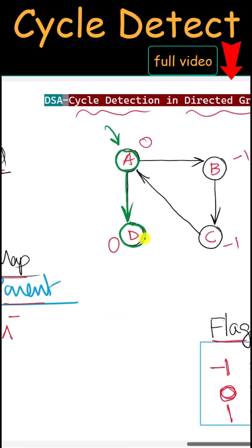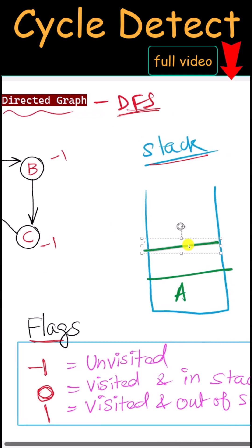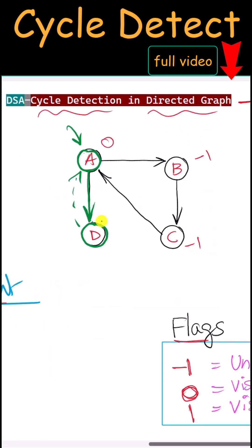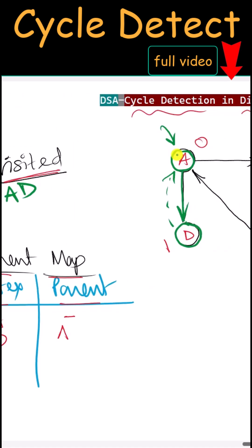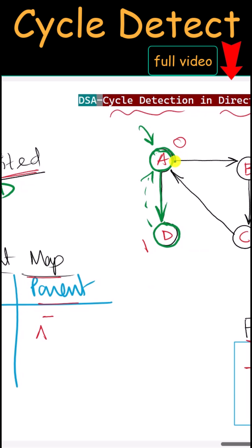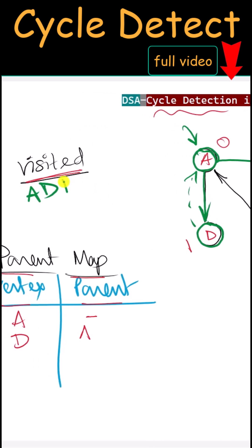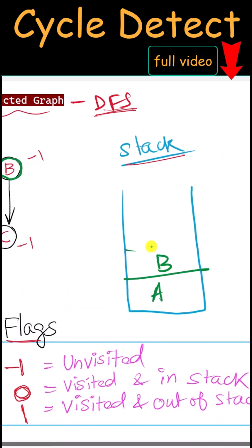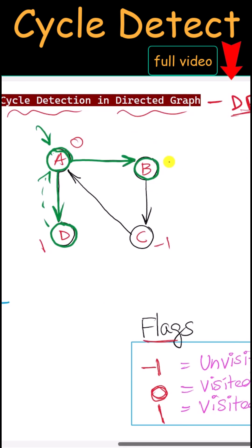From D we have nowhere to go, so we have to backtrack to the parent node. We pop D from the stack and modify its flag to 1 — meaning visited and out of the stack. Now we're back to node A. From here we're going to visit B. We mark B as visited, push it in our stack. Vertex B has parent A, and we modify its flag to 0.